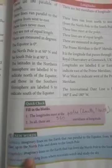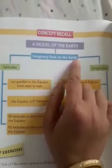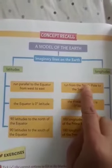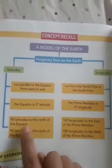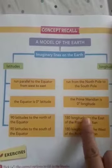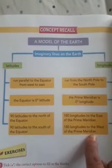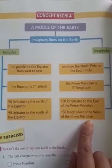These are the new words: latitudes, longitudes, observatory. I hope you understood the lesson. Our lesson is complete. Now there is a concept recall — a model of the earth. Imaginary lines on the earth are latitudes and longitudes. Latitudes run parallel to the equator from west to east. Longitudes run from north pole to south pole. The equator is zero degree latitude. The prime meridian is zero degree longitude. There are 90 latitudes to the north of the equator and 90 to the south. There are 180 longitudes to the east and 180 to the west of the prime meridian. It is very easy and simple. If you have any problem, you can go through the lesson again and find the answers.